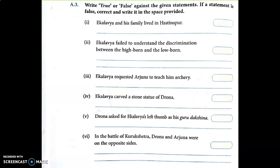Statement one: Eklavya and his family lived in Hastinapur. Can you guess — is it true? No, it's false. Correction: Eklavya and his family lived a little away from Hastinapur. Statement two: Eklavya failed to understand the discrimination between the high bond and the low bond. Yes, it's true.